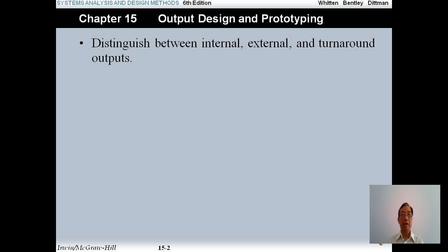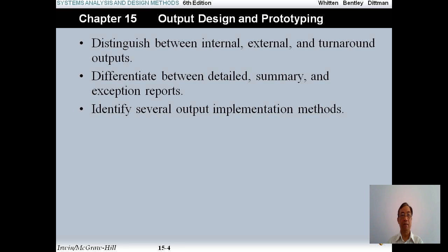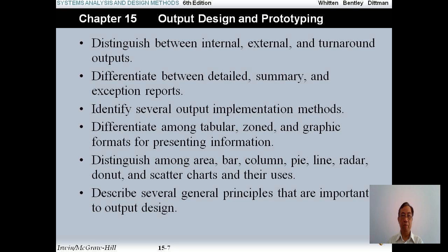In this chapter I will distinguish between internal, external, and turnaround outputs. I will differentiate between detail, summary, and exception reports. I will identify several output implementation methods. I will differentiate among tabular, zone, and graphic formats for presenting information. I will distinguish among area, bar, column, line, radar, donut, and scatter charts and their usage. I will describe several general principles important to output design, and I will design and prototype computer outputs.